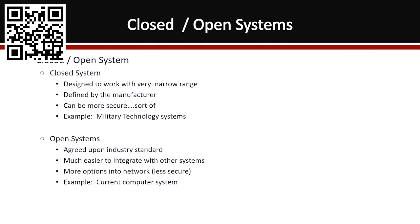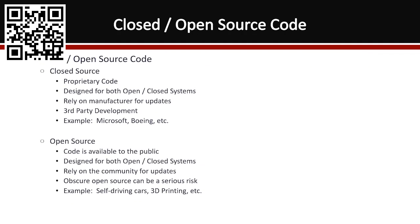In the open source world, everybody has access to development. It may be a little less secure because everybody can find the faults — but the good thing is everybody can find the faults. Windows itself is a mix: it's open to some extent because it's built on standards, but it's also closed because they don't want to share their proprietary information. A current computer system is more of an open type system.